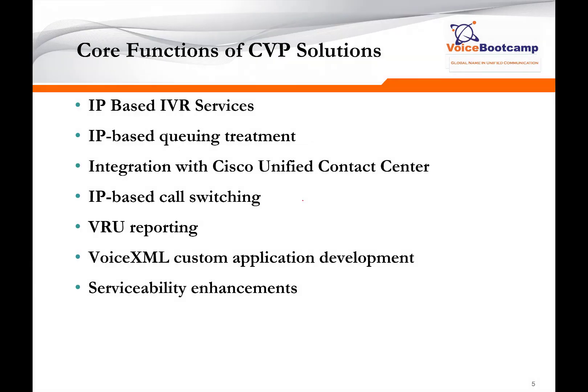The core function of CVP is to provide 100% IP-based IVR services. It also provides queuing treatment — meaning when an agent is not available, with the help of ICM or Contact Center Enterprise, it can queue the call. While queuing, it can play music, let the customer know they are waiting in a queue, and interact with the customer by asking questions and taking answers. In order to queue the call, you must use Cisco Unified Contact Center Enterprise.